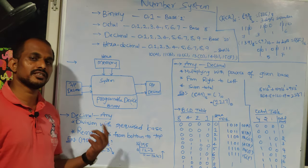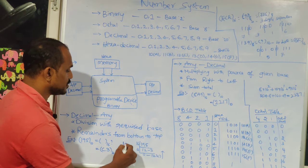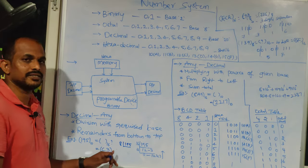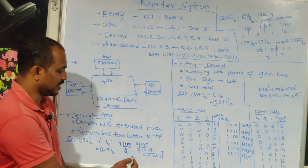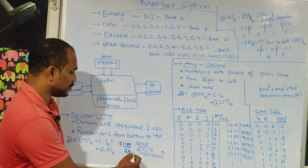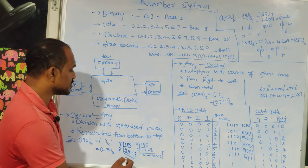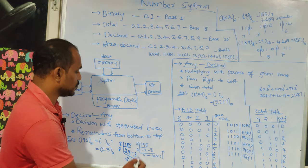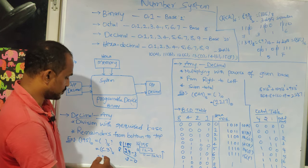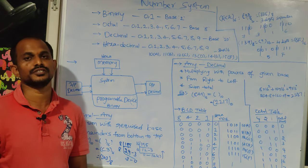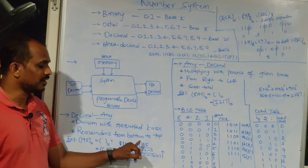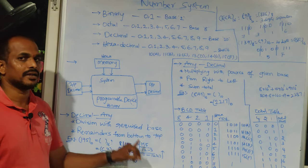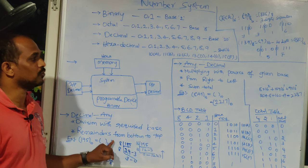Now convert the same decimal number 195 to octal using base 8. Divide 195 by 8: 8 twos are 16, remainder 3; then 35 divided by 8 gives 4 remainder 3; then 24 is divisible by 8 — 8 threes are 24, remainder 0. Reading from bottom to top gives the octal equivalent 303. The rule for decimal to any format: divide the decimal number by the required base and write the remainders from bottom to top.